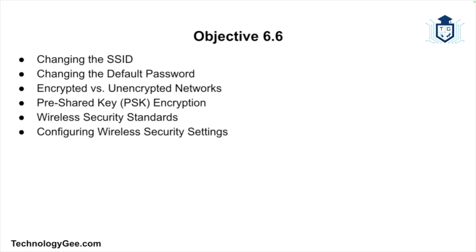By the end of this video you'll know how to configure key settings like changing the Service Set Identifier, changing the default password, and understanding the difference between encrypted and unencrypted networks — including open networks, pre-shared key networks, and the different wireless security standards such as WPA, WPA2, and WPA3.